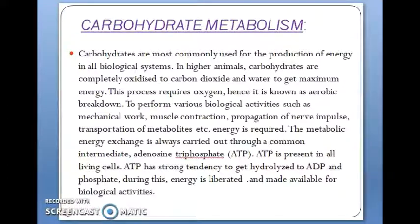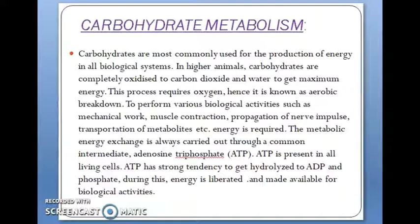Now we see carbohydrate metabolism. Carbohydrates are most commonly used for the production of energy in all biological systems. In higher animals, carbohydrates are completely oxidized to carbon dioxide and water to get maximum energy; this process requires oxygen, hence it is known as aerobic breakdown. To perform various biological activities such as mechanical work, muscle contraction, propagation of nerve impulse, and transportation of metabolites, energy is required. The metabolic energy exchange is always carried out through a common intermediate, adenosine triphosphate (ATP), which is present in all living cells. ATP has a strong tendency to hydrolyze to ADP and phosphate, during which energy is liberated and made available for biological activities.